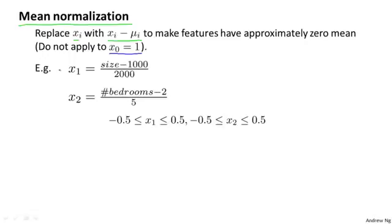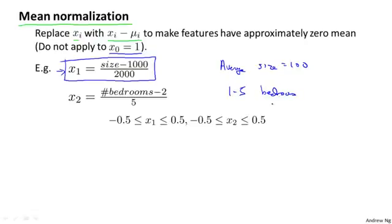But concretely, for other features, if the range of sizes of a house takes on values between 0 to 2,000 and if the average size of a house is equal to 1,000, then you might use this formula. Similarly, if your houses have 1 to 5 bedrooms and if on average a house has 2 bedrooms, then you might use this formula to mean normalize your second feature x2.